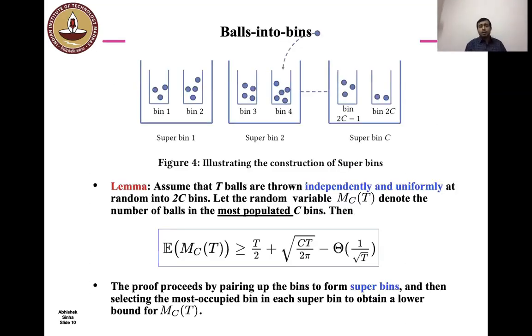So consider the following setup. Assume that T balls are thrown independently and uniformly at random into 2C bins. Let the random variable M_CT denote the number of balls in the most populated C bins. Then we actually show that expected load in the most populated C bins, that is expected value of M_CT, is lower bounded by T/2 + √(CT/2π) minus a constant divided by √T. The proof proceeds by pairing up the bins to form super bins and then selecting the most occupied bin in each super bin to obtain a lower bound for M_CT. The details are given in the paper.